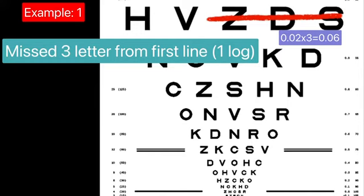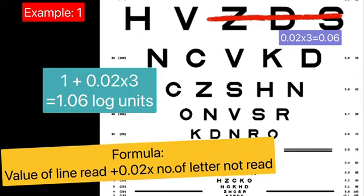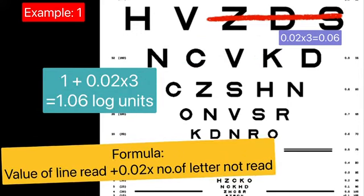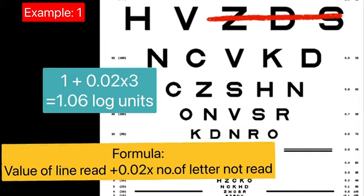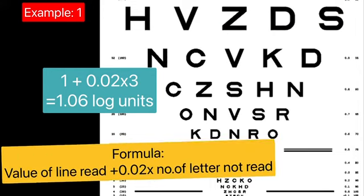Since each letter contains a value of 0.02 log units, hence for three letters, the value will be 0.06. After adding 0.06 to one log unit, it will be 1.06.